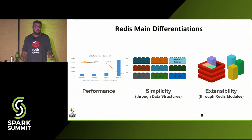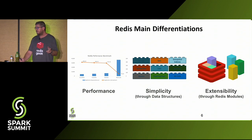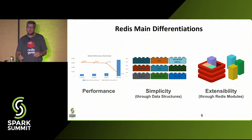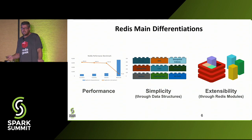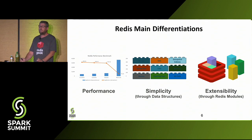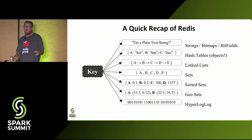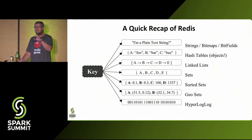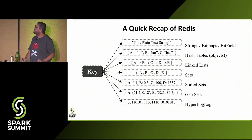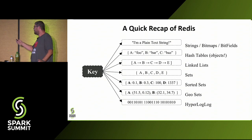Redis is also simple. There is a very simple set of data structures that you can use like Lego to build the desired result, and also a very simple set of commands. Redis is also extensible through the module system API, which I'm going to show later. So basically it's not just a key-value store — it's a key-to-data-structure store. The native data structures in Redis go from strings through linked lists to HyperLogLogs.